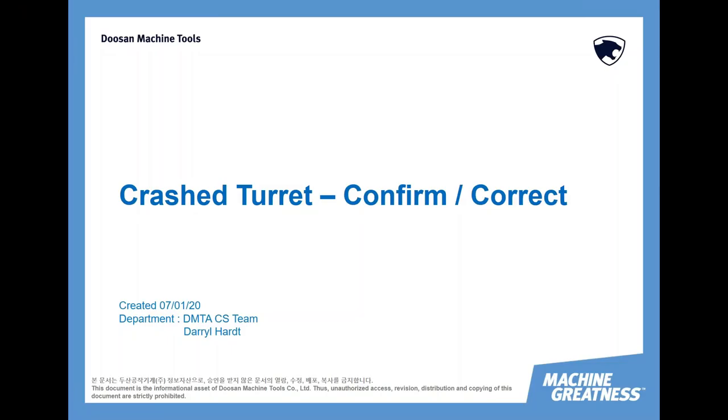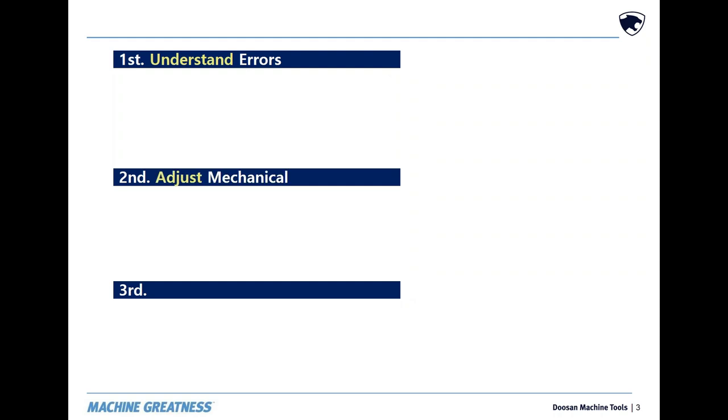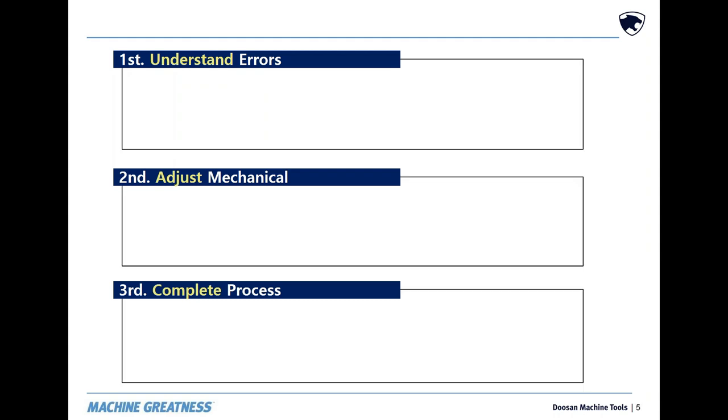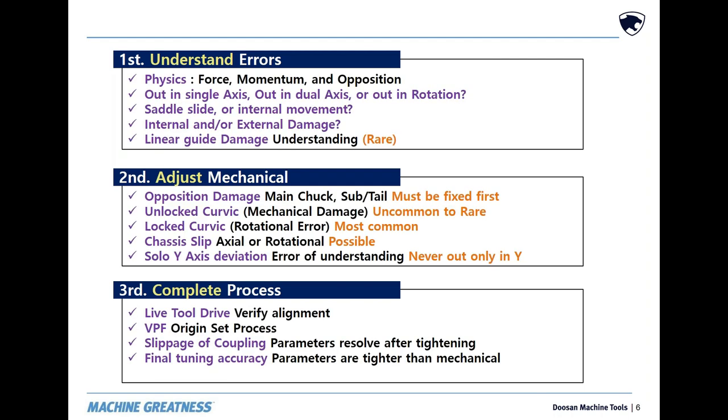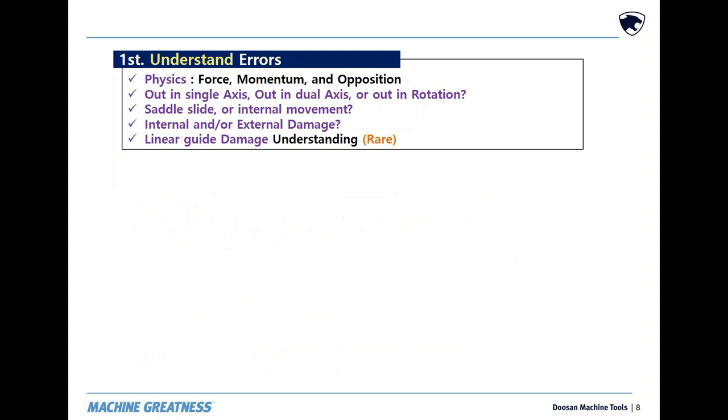Welcome to crashed turret confirm and correct. There are three fundamental processes for turret correction: understanding what the errors are and how they got there, adjusting the appropriate mechanical issues into tolerance, and the process required to complete and validate the machine. Each of these processes has variations to the procedure. While this list is not 100% of all possible problems, it addresses a vast majority of them.